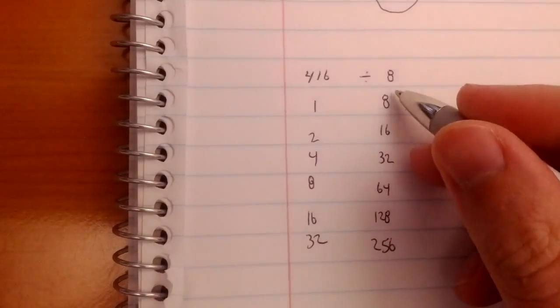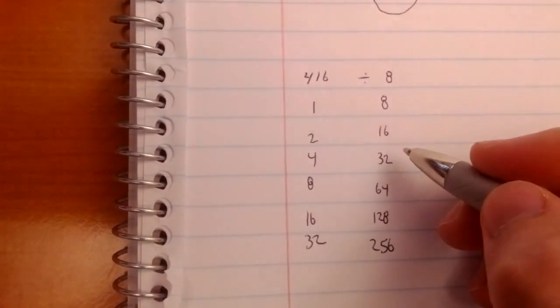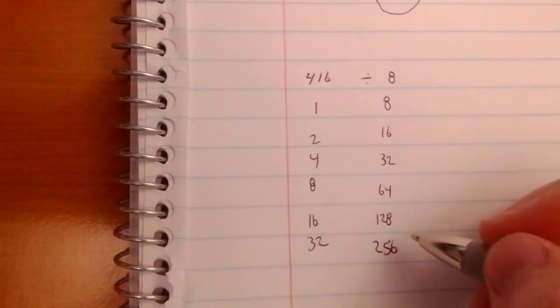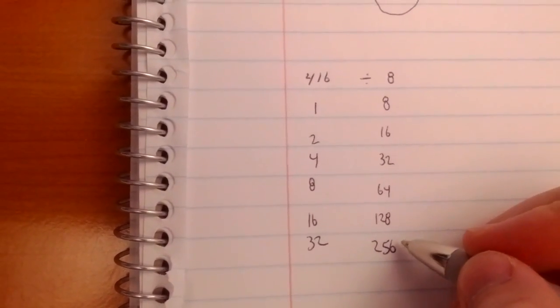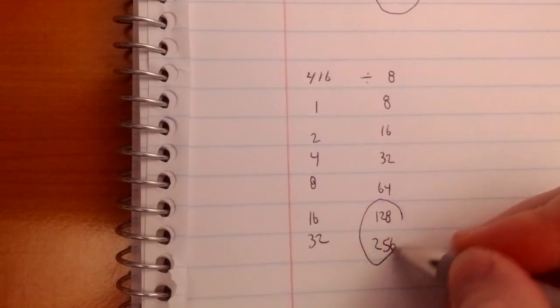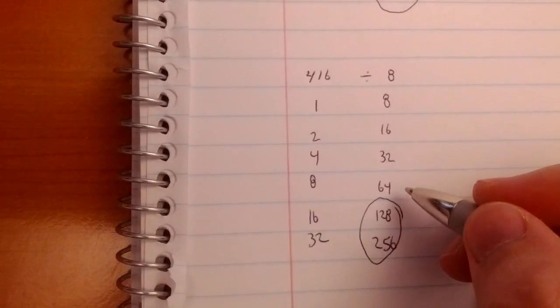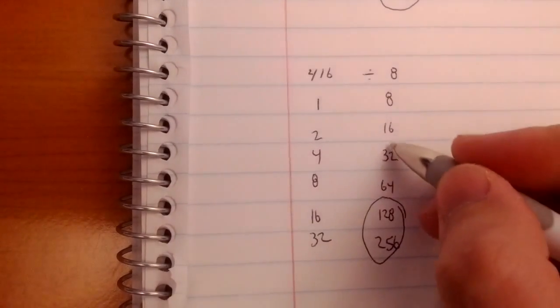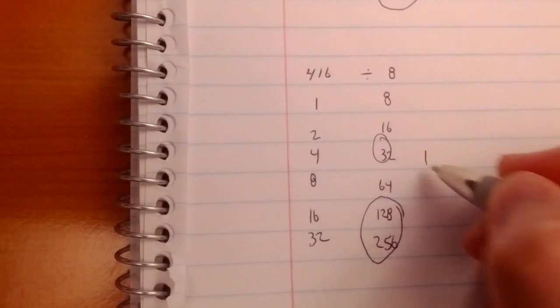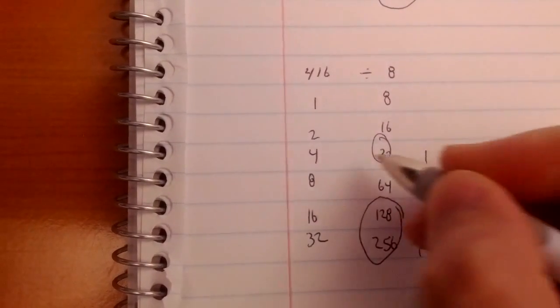What over here equals 416? That's the difference now. I'll start with my biggest numbers: 256 and 128, that's 384. 384 plus 32, that's 416. So, on, on, on. The others are off.